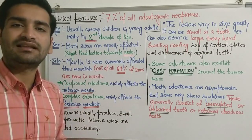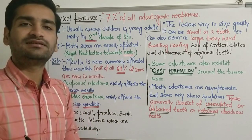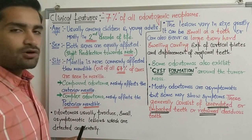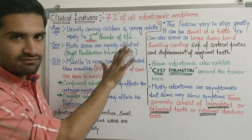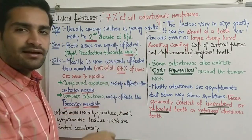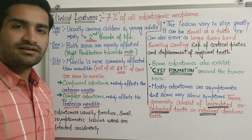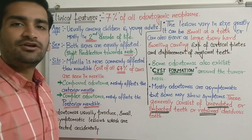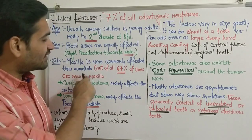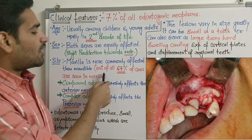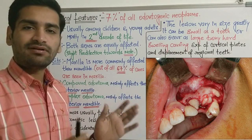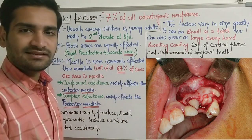There are cases which have occurred in later stages of life also, but the second decade is most common. Regarding sex, both sexes are equally affected, but a slight predilection is seen towards males — males are slightly more affected compared to females. This is unlike adenomatoid odontogenic tumor, where females were more commonly affected. Regarding site, maxilla is more commonly affected than mandible — 67 percent of cases occur in maxilla.